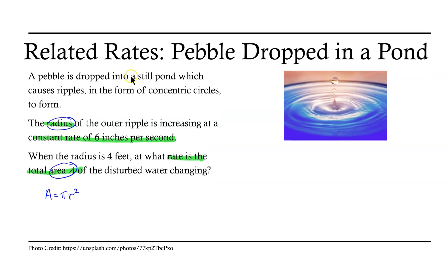We can imagine if a pebble is dropped in a pond that these circles are moving outward. In this case, the circles moving outward means that not only is the radius changing, but also the area contained in those concentric circles is changing as well.